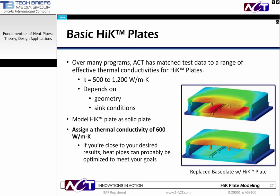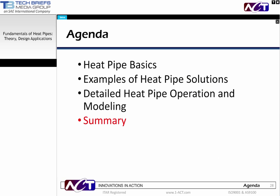A similar approach can be used for High-K plates. As discussed earlier, tested results show a thermal conductivity range of 500 to 1,200 watts per meter K can be achieved depending on geometry. To quickly model High-K plates, you replace your aluminum or base material conductivity with 600 watts per meter K. If you get favorable results, a High-K plate solution with an optimized heat pipe array can usually be designed and fabricated.